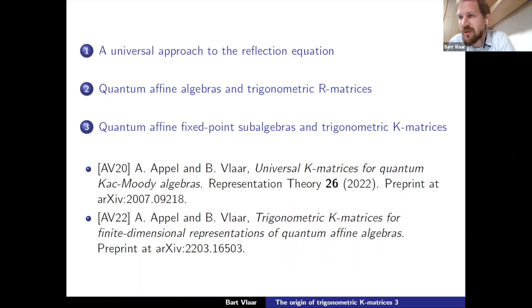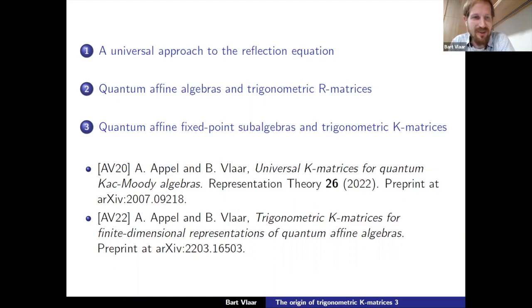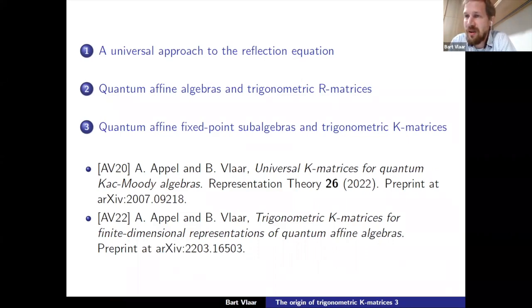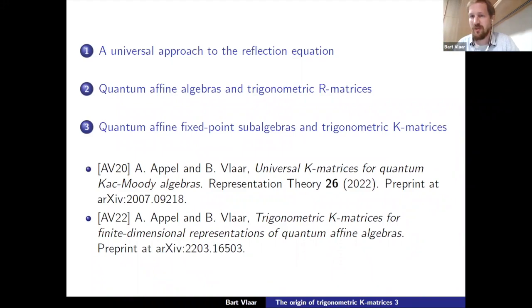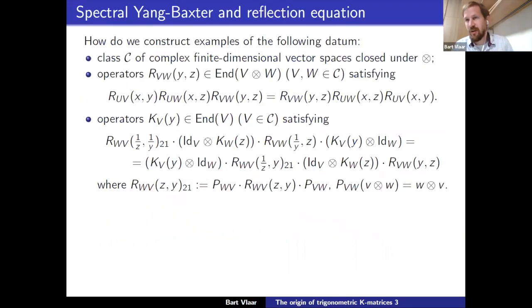In Part 3 I'll highlight the main results from recent work. The recent work consists of two papers: one from a few years ago, recently published, which I'll refer to as AV20 since it appeared on the archive in 2020, and a more recent paper from about half a year ago, which will be the main topic — actually how to get trigonometric K-matrices from a universal formalism. For integrability we want to construct solutions to certain graded-type equations depending on parameters.